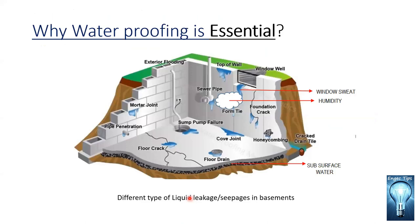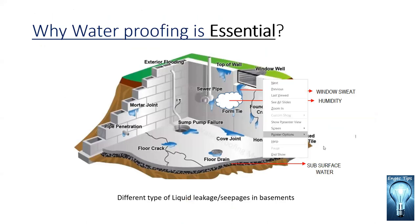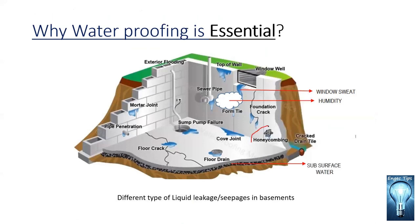Then we will discuss why waterproofing is essential. In this figure you can see all the possible ways that water can come through the structure into internal structures. First, honeycombs — water comes through honeycombs in buildings, and also through foundation cracks and form ties.